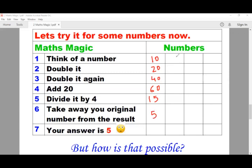What if I think of 0? Start with 0. Double it, I'll get 0. Double it again, I'll still get 0. And adding 20 to it, I'll get 20. 20 divided by 4 will give me 5. And 5 take away 0, which is my original number, I'll still get 5.